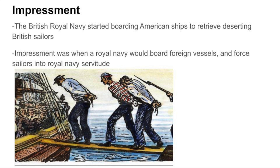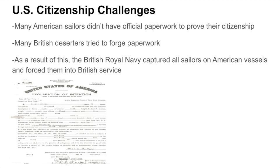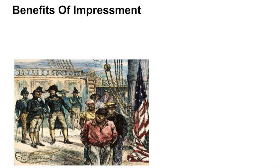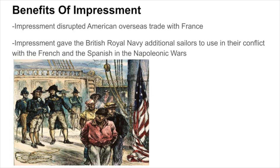At this time, citizenship was a complicated topic, and many American sailors didn't have official paperwork to prove their citizenship. Many British deserters also tried to forge paperwork, which complicated the process even more. This caused the British Royal Navy to capture all sailors on American vessels and force them all to serve the British Royal Navy. The policy of impressment helped Great Britain in two major ways: firstly, it disrupted American overseas trade with France, and secondly, it gave the British Royal Navy additional sailors to use in their conflict with the French and the Spanish in the Napoleonic Wars.